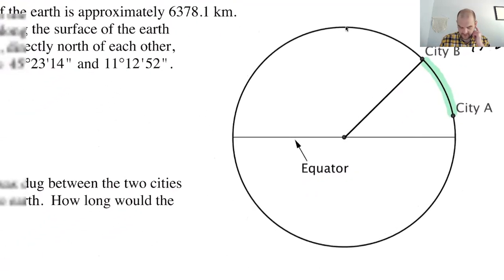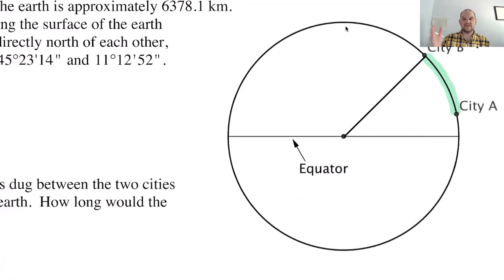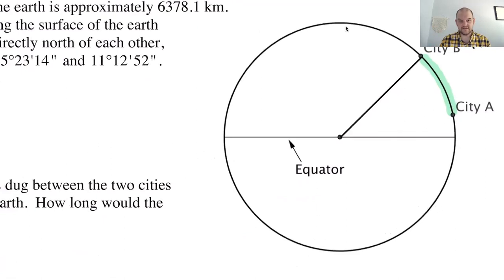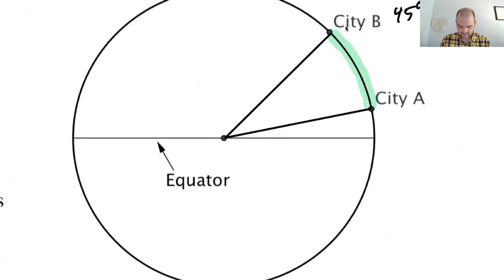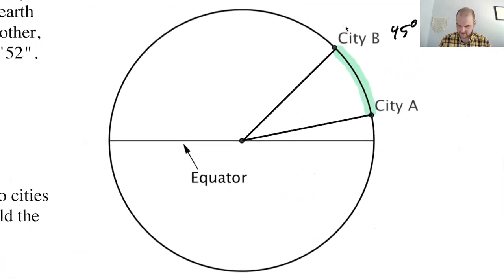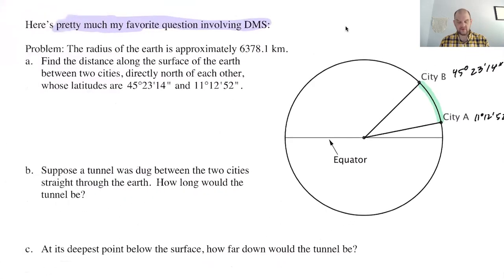And then the other angle we're given — 11 degrees, 12 minutes, 52 seconds — is the angle formed there. So that's 11 degrees, 12 minutes, 52 seconds. And we want to find the distance along the surface of the Earth between the two cities.